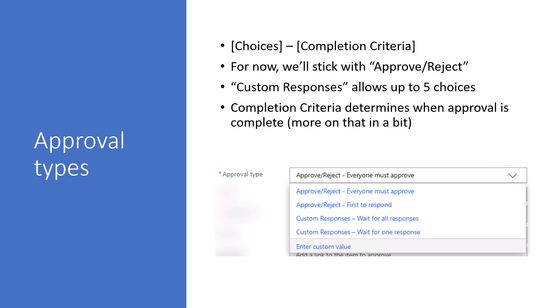When you go in and create an approval, the first thing you need to choose is the approval type. The breakdown of choices here is that the first part represents the choices the user has in the approval message, and the second part is the completion criteria — what determines when the approval is complete. For simplicity, we're going to go with the standard approve and reject options and focus on the completion criteria and assignment.